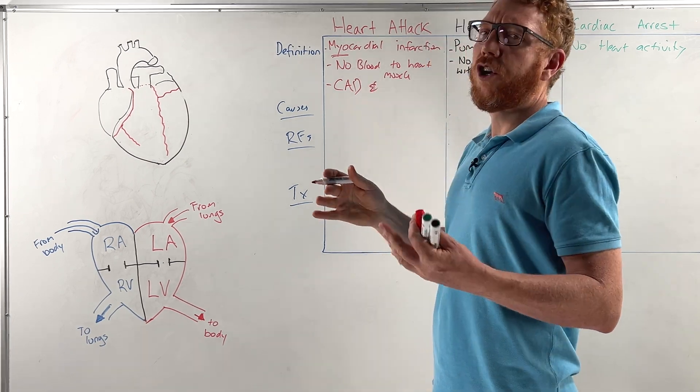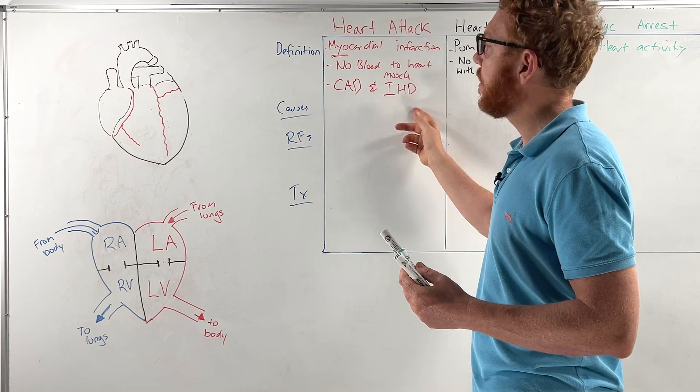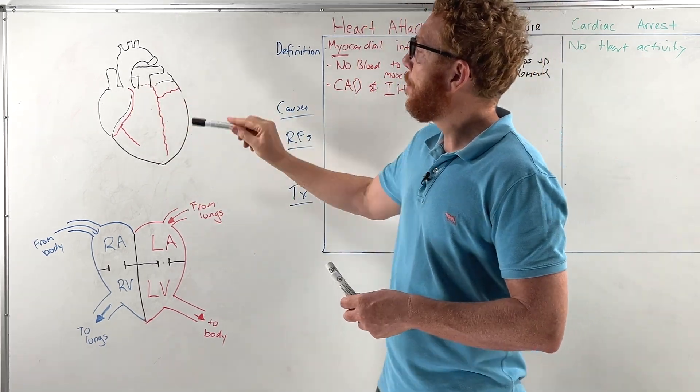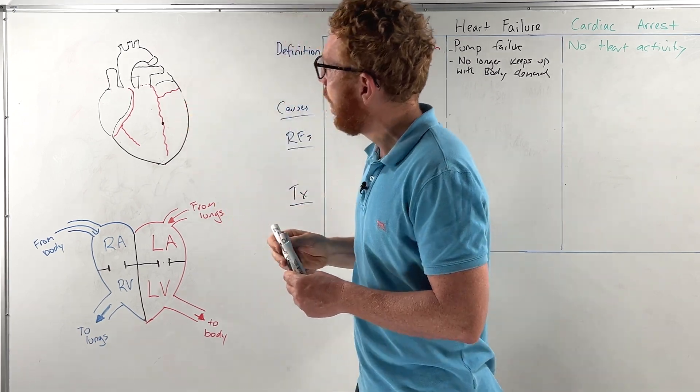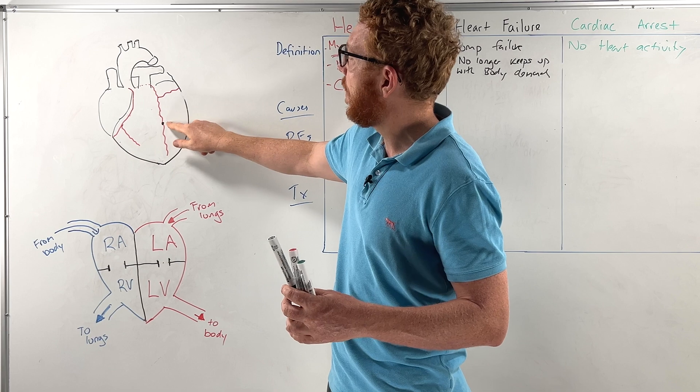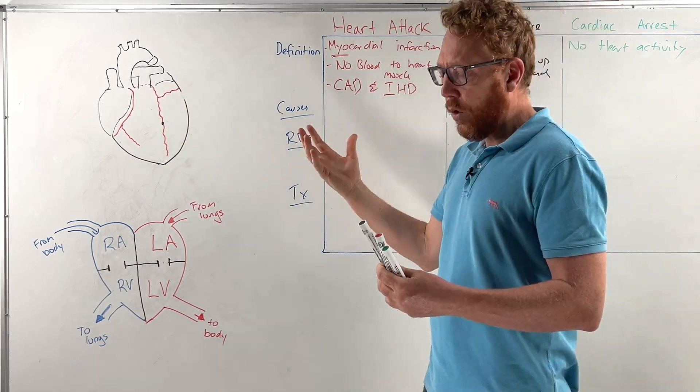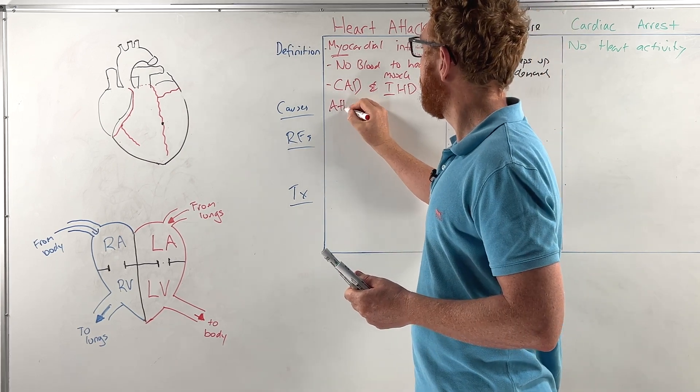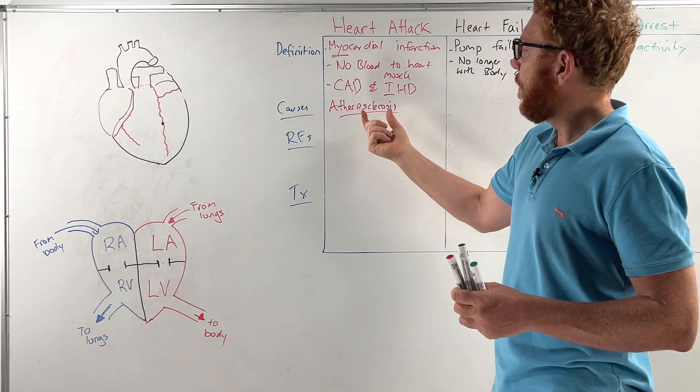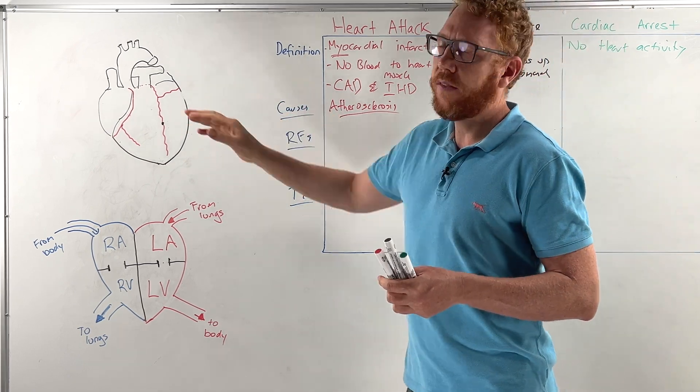Other terms commonly used is ischemic heart disease, IHD. Ischemia means a reduction in blood flow. Either of these terms mean the same thing but essentially what is causing the issue is a blockage in the blood vessel. In the coronary vessels we have the left and the right which branches off into smaller branches. Here on the left, this is a very common location of a blockage called the left anterior descending or the LAD vessel. The cause of that blockage is atherosclerosis.